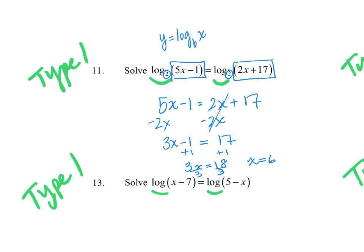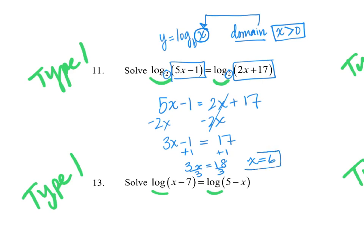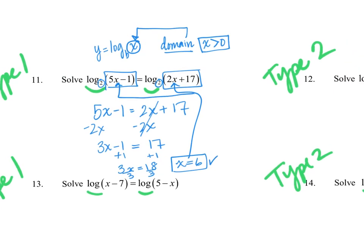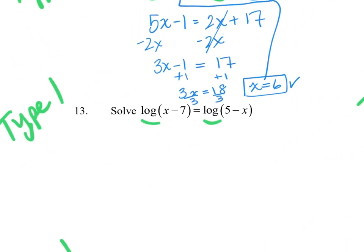One thing to be very careful of with log equations: the log function has domain restrictions — whatever you use as the argument must be positive. So before boxing the final answer, check that plugging x back in doesn't cause trouble. Here, 2 times 6 is 12 plus 17 — positive — and the other expression also checks out, so x equals 6 is valid.